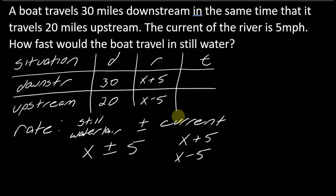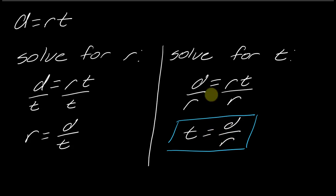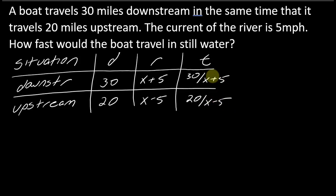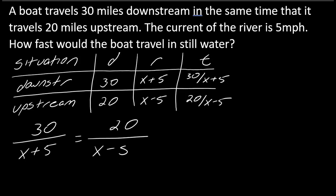We're told the boat travels in the same amount of time. I don't know anything about the time except that the two are equal. But I know time can be written as distance over rate. So for downstream, time is 30 over (x plus 5), and for upstream it's 20 over (x minus 5). Since the word 'same' in math means equal, I can set these two expressions equal to one another. This gives us a rational expression — more specifically, a proportion.